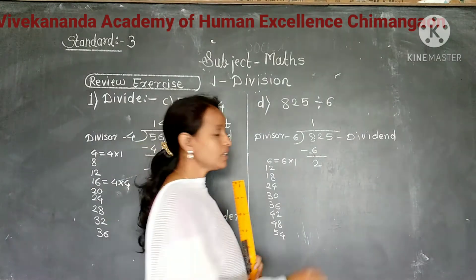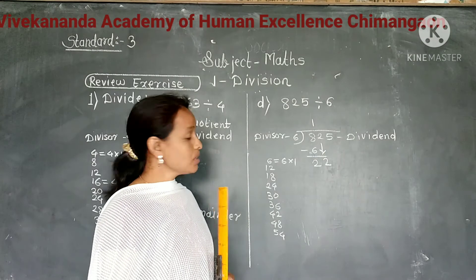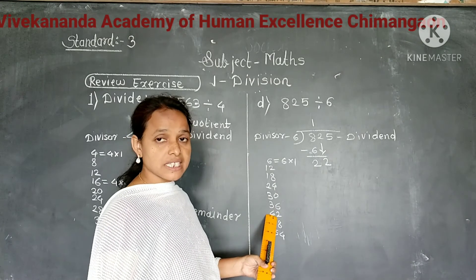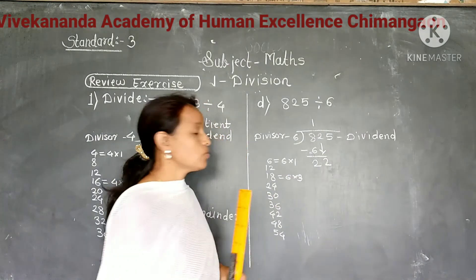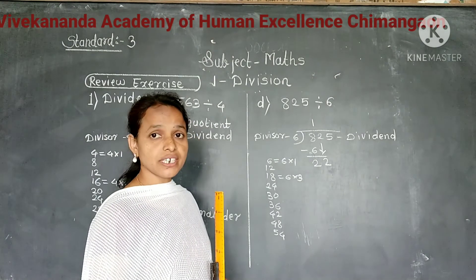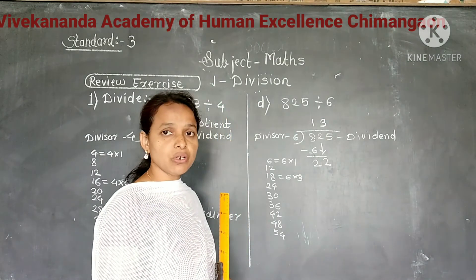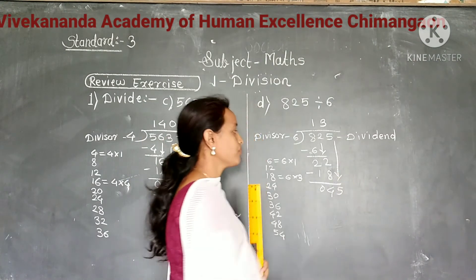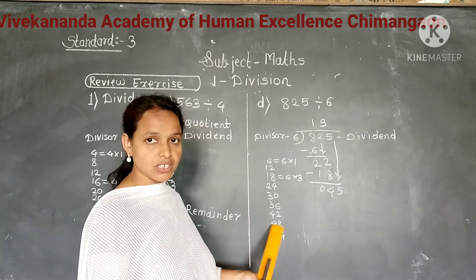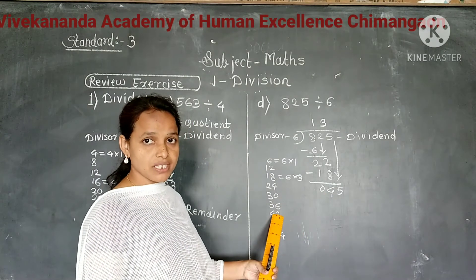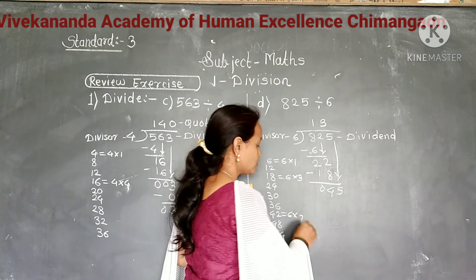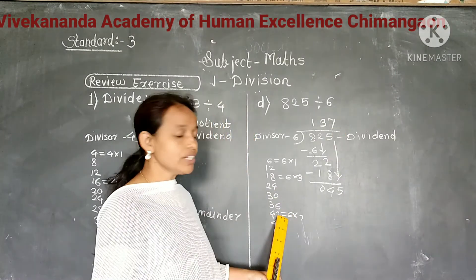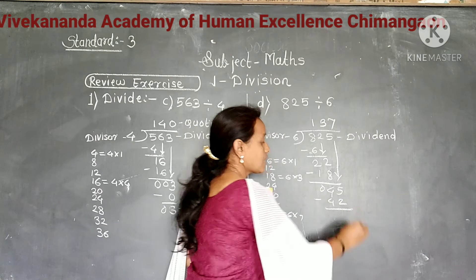Next digit 2, we bring down to make 22. Now we divide 22 by 6. But 22 is not in the multiplication table of 6. So less than 22 is 18, which comes in the third place of the multiplication table of 6. So we divide 22 by 6, it gives 3 as a quotient. Write 3 as a quotient in the tens place and write product 18 below 22. Subtract, gives 4. Next digit 5, bring down to make 45. Now divide 45 by 6. 45 is not in the multiplication table of 6. So less than 45 is 42, which comes in the 7th place of the multiplication table of 6. So we divide 45 by 6, it gives 7 as a quotient. Write product 42 below 45. Subtract, gives 3. So dividing 825 by 6 gives 137 as a quotient and 3 as a remainder.